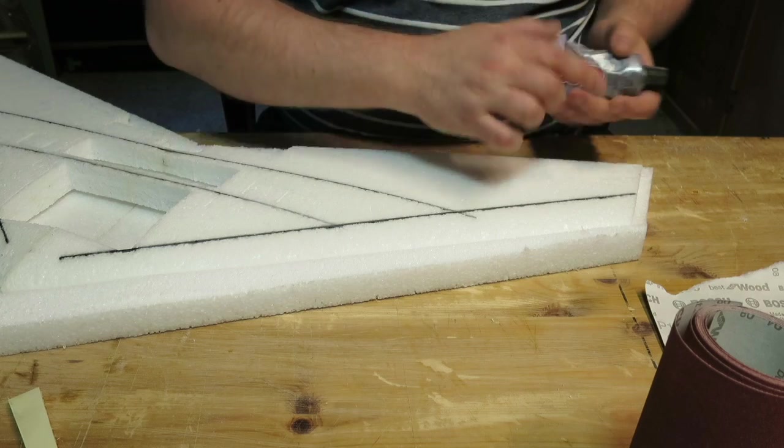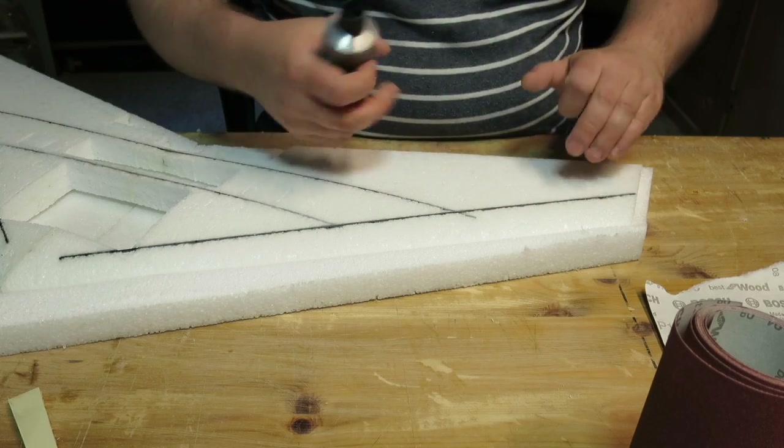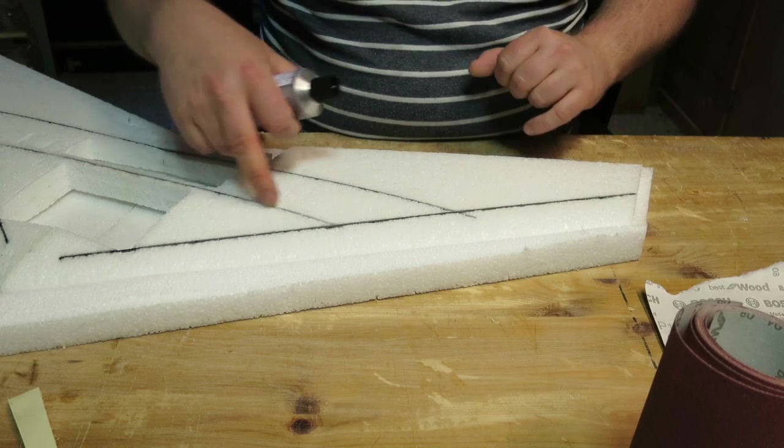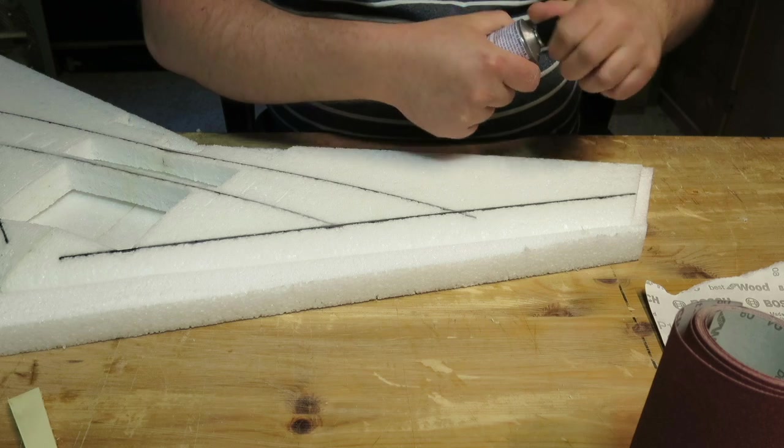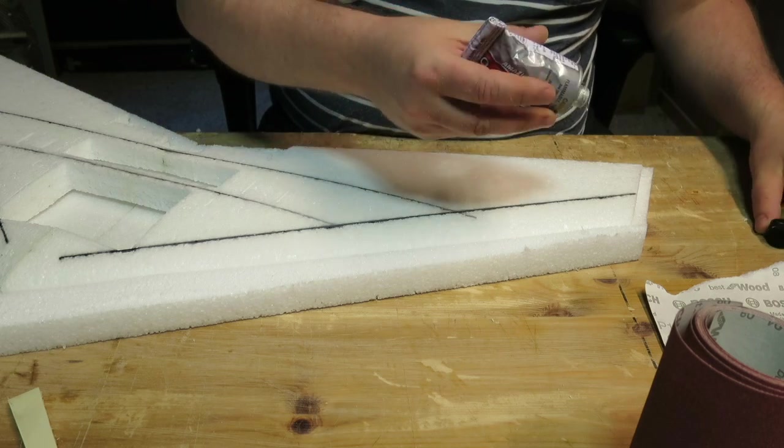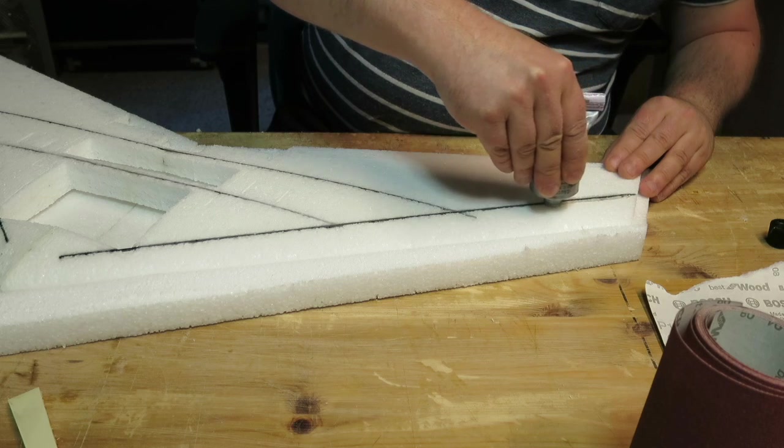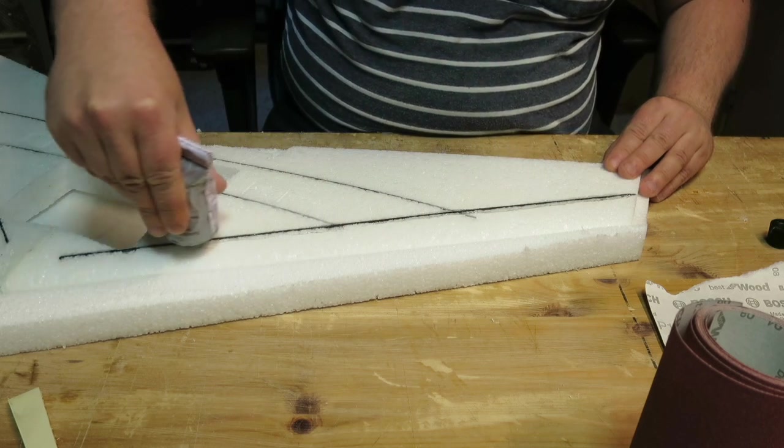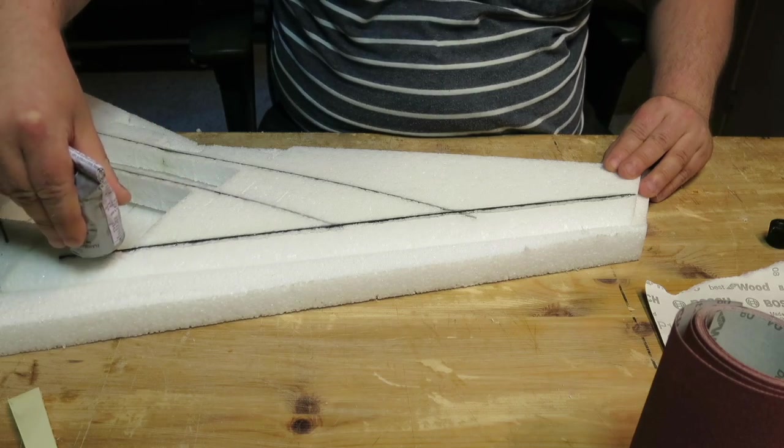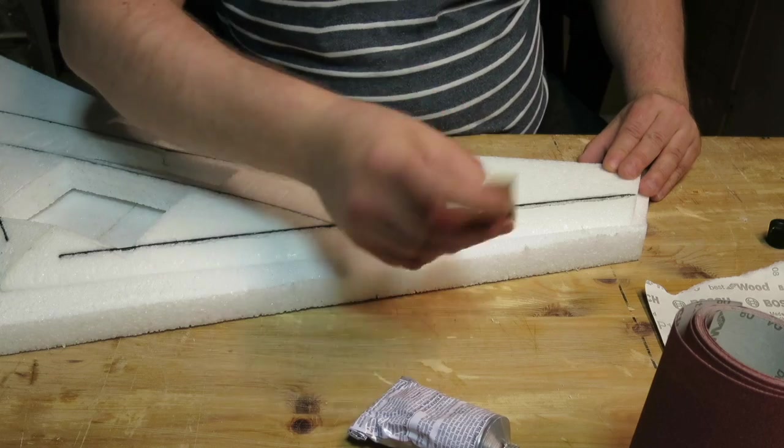So now I will place goop on top of these spars. This is to link the spars together with the laminate. Makes it super strong and stiff.